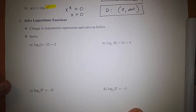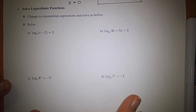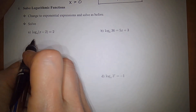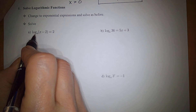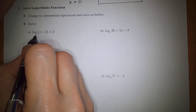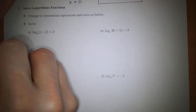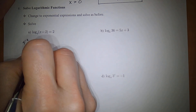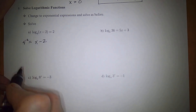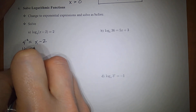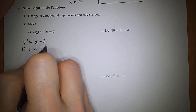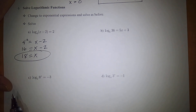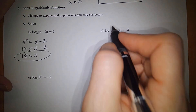Let's finish by solving four equations by changing to exponential form. For the first, converting gives 4 squared equals x minus 2. Since 4 squared is 16, we have 16 equals x minus 2, so adding 2 gives x equals 18.